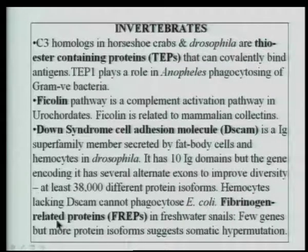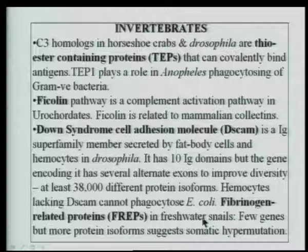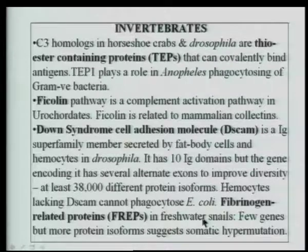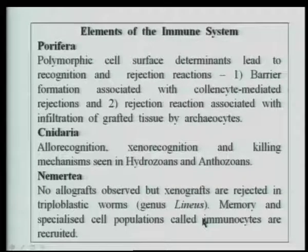It is surprising that such early animals have mechanisms similar to those found in the mammalian immune system. Yet, of course, many of these molecules are not as perfect and do not do their job as perfectly as in mammalian organisms. Let us go into the elements of the immune system and find out what important aspects occurred during evolution to make the mammalian immunoglobulin molecule so perfect.